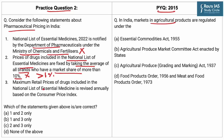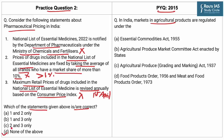Statement 3: Maximum retail prices of drugs included in the National List of Essential Medicines is revised annually based on the Consumer Price Index. This statement is incorrect because the revision of prices is according to the Wholesale Price Index for the preceding calendar year and is notified on 1st April every year. From the above discussion, we can conclude that none of the above statements are correct, making Option D the right answer. As far as the PYQ is concerned, Option B was the right answer.